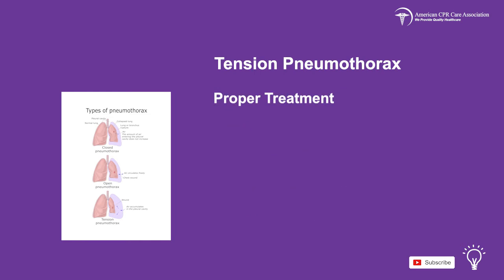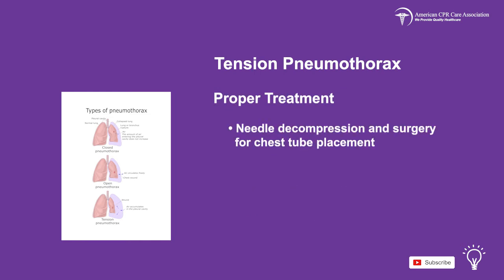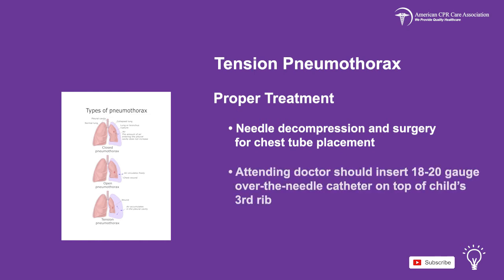Proper treatment of tension pneumothorax includes needle decompression and surgery for chest tube placement. The attending doctor should insert an 18-20 gauge over-the-needle catheter on the top of the child's third rib to successfully disseminate the trapped air.